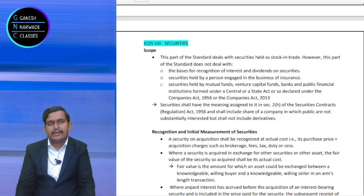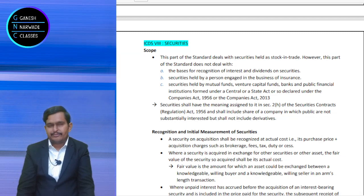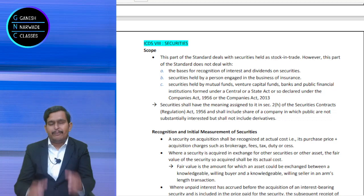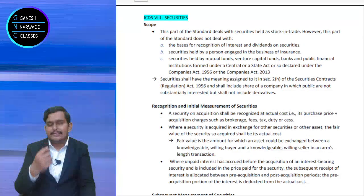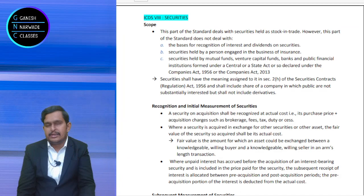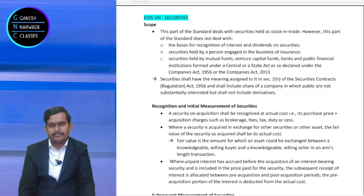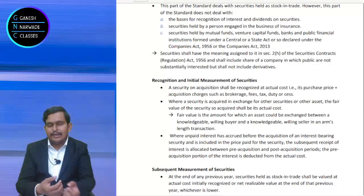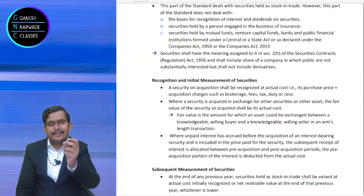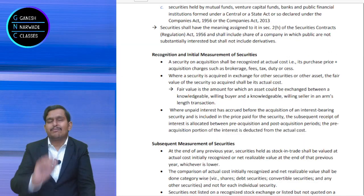Interest and dividend income recognition is measured under ICDS on Revenue Recognition — this ICDS does not talk about it. Now, basically, why does this ICDS exist? When you sell securities held as stock in trade, the sale consideration is quite straightforward. Sale consideration minus cost is treated as income. The sale consideration is easy to determine, but how do we measure the cost? That is what is explained in this ICDS.